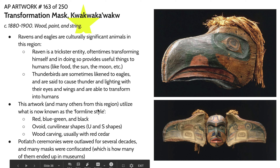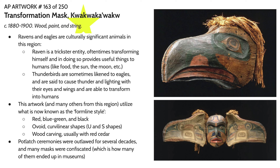Ravens and eagles and other birds are culturally significant animals in this region. Raven in particular is a trickster entity who will transform himself into humans or different animals, and in doing so inadvertently provides useful things to humans — like food, the sun, the moon, salmon, etc. He's kind of trying to fulfill his own needs and desires, and in doing so provides really essential things to humanity. Thunderbirds are sometimes likened to eagles, said to cause thunder by the beating of their wings and lightning from their eyes. There's also mythology that thunderbirds can transform into humans — again connecting to this human-to-animal transformation theme.